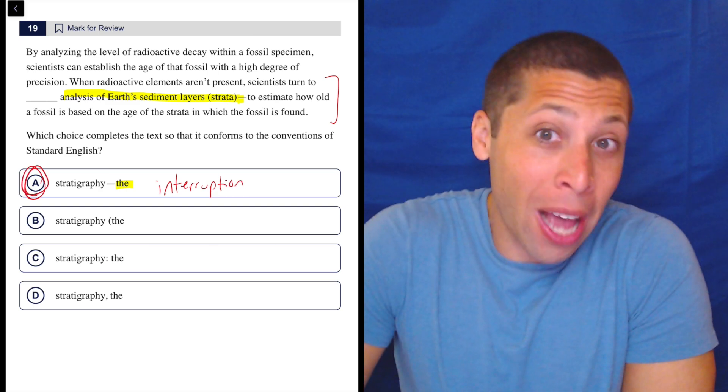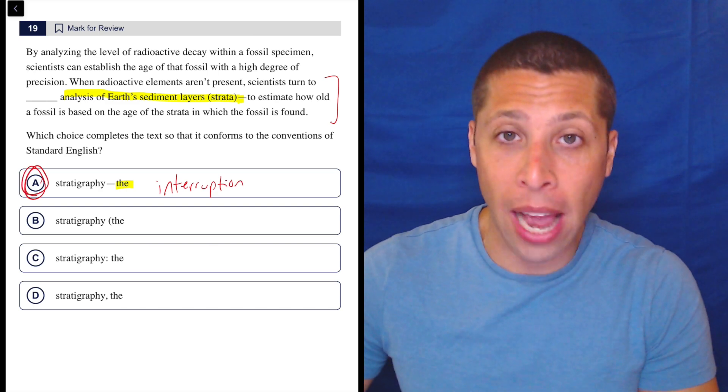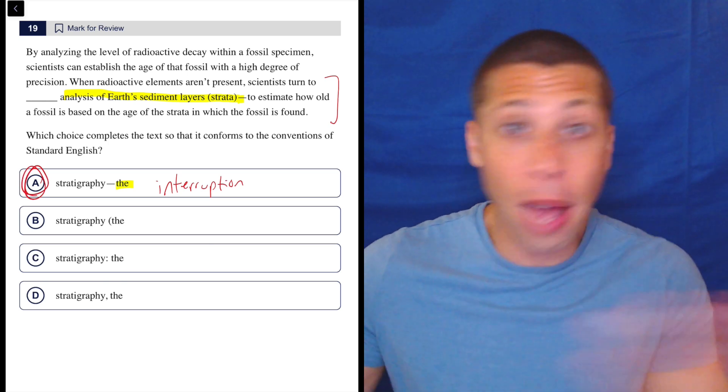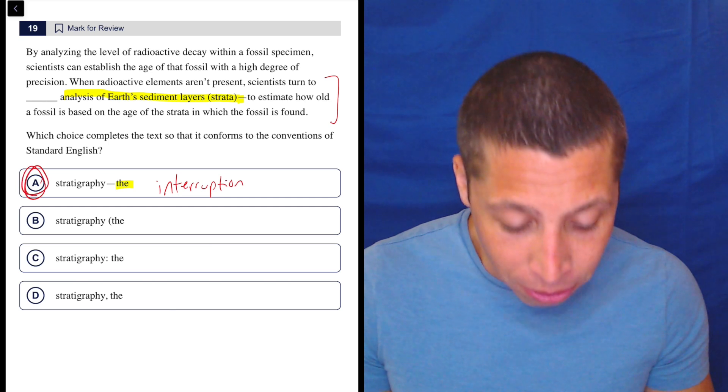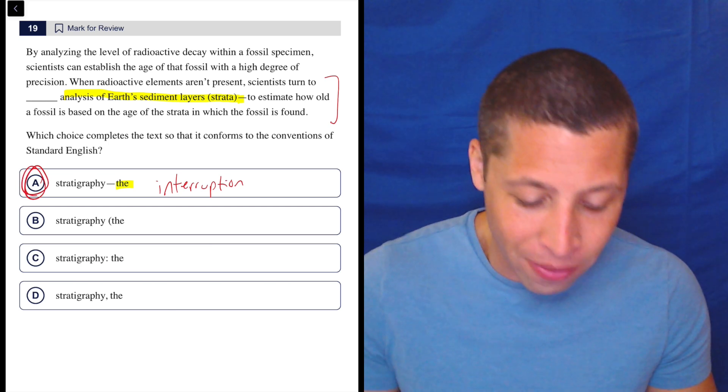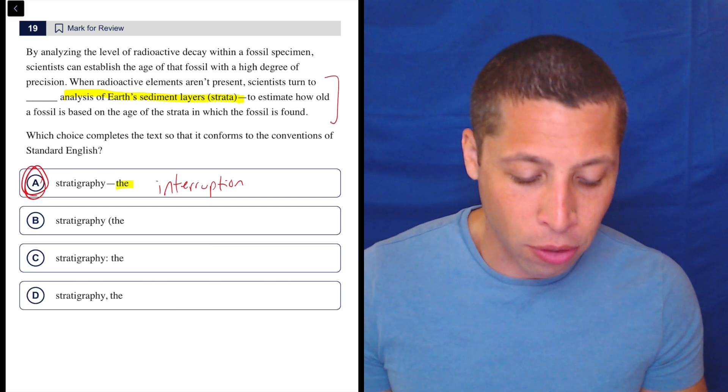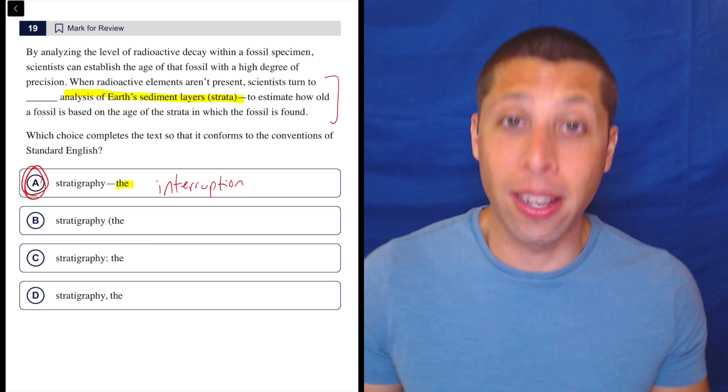And so we could read the sentence without that, and that's a way to test whether the double dash makes sense, right? Cut that part out, see how it sounds. When radioactive elements aren't present, scientists turn to stratigraphy to estimate how old a fossil is based on the age of the strata in which the fossil is found. Sounds fine. Sounds like a real sentence.